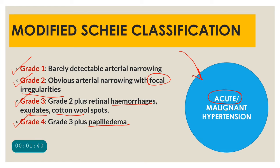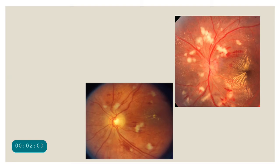To summarize: grade 1 is something very difficult to detect. Grade 2 is very obvious narrowing of the arteries along with focal irregularities. Grade 3 always involves three things — hemorrhages, exudates, and cotton wool spots. And grade 4 is the advanced stage when papilledema, that is disc involvement, occurs.